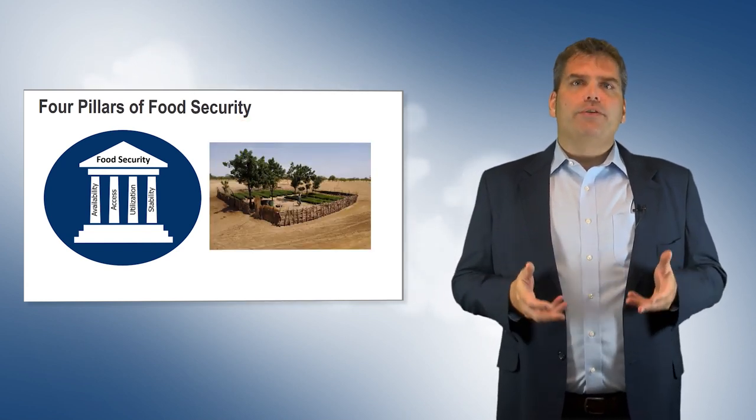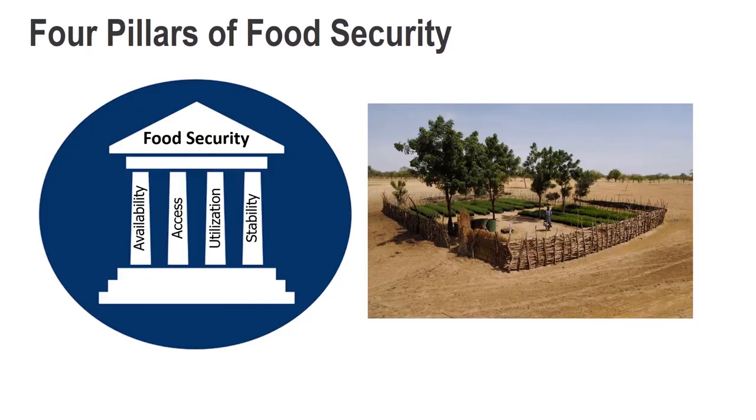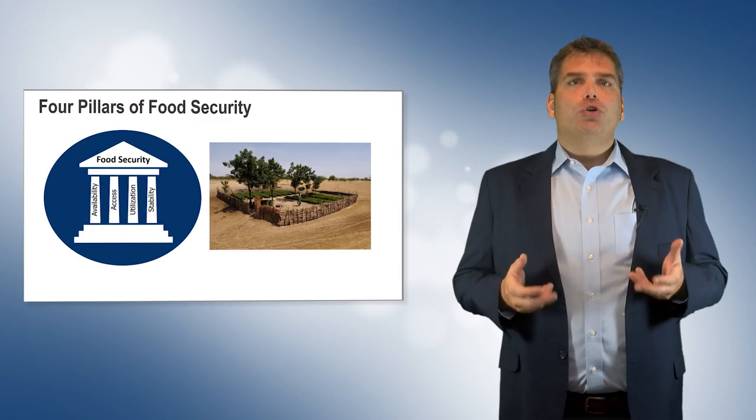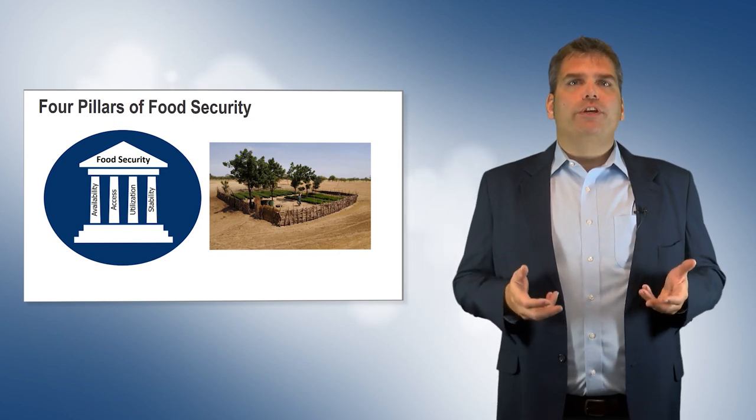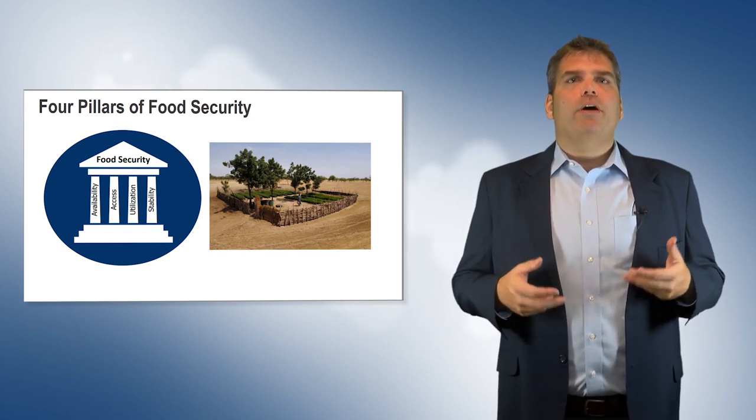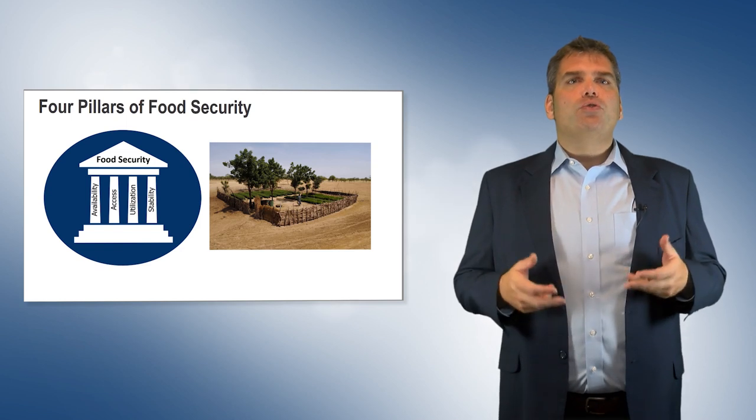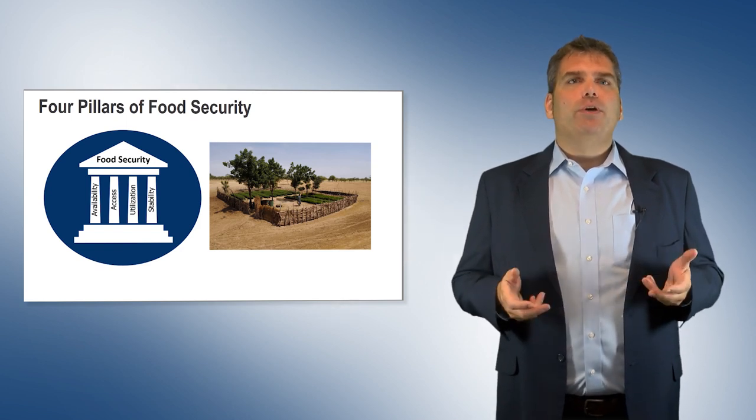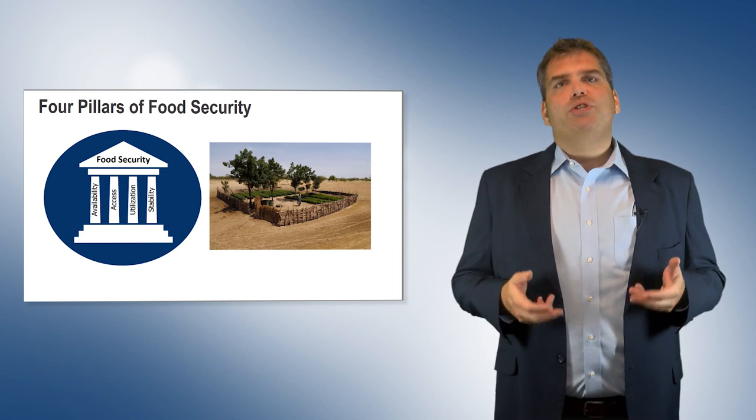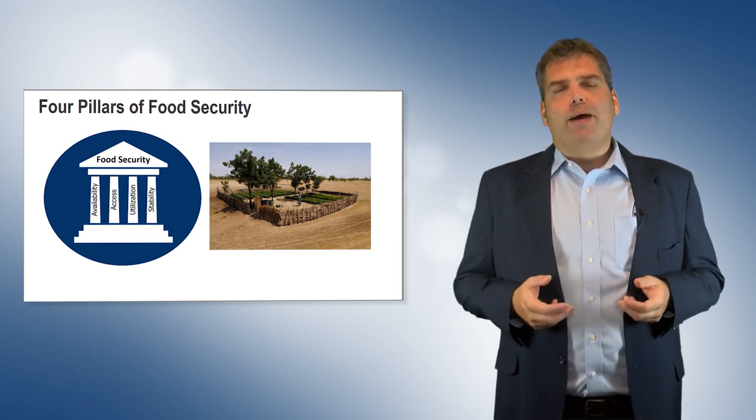The last factor, stability, measures the tendency and persistence of food insecurity over time. Chronic or permanent food insecurity is the most extreme form of instability. It is usually triggered by periods of infrequent food insecurity that slide a population further down into the poverty trap.